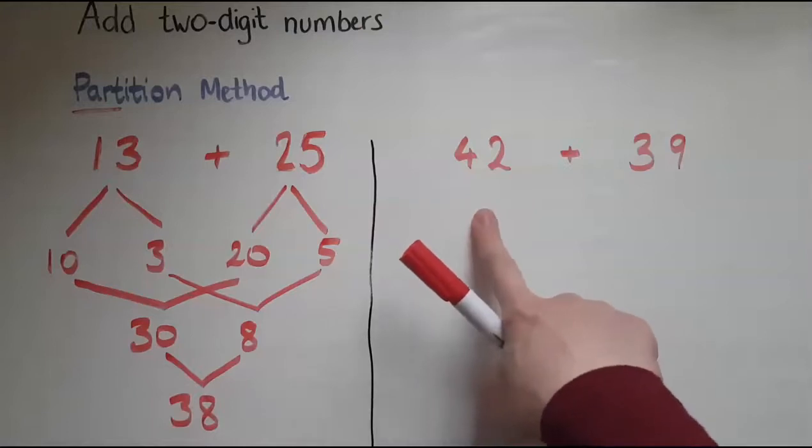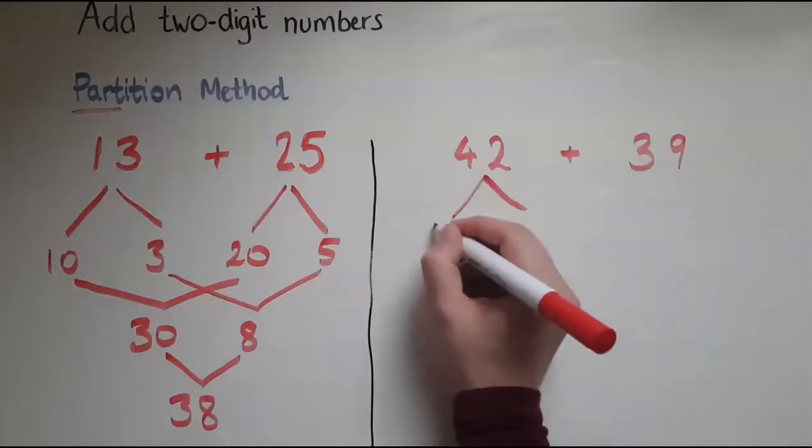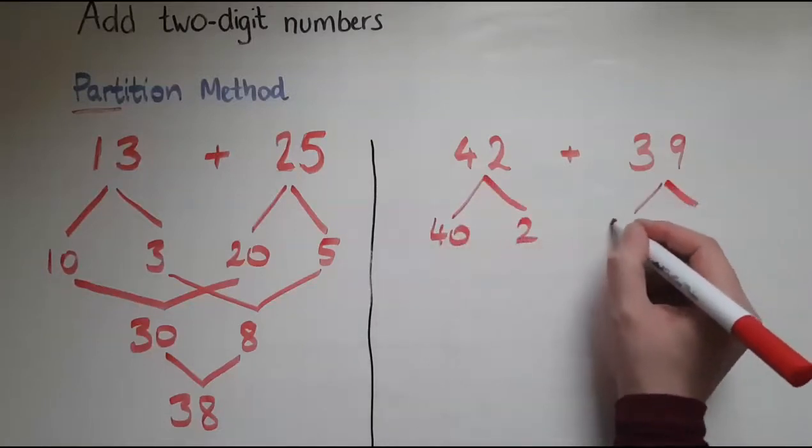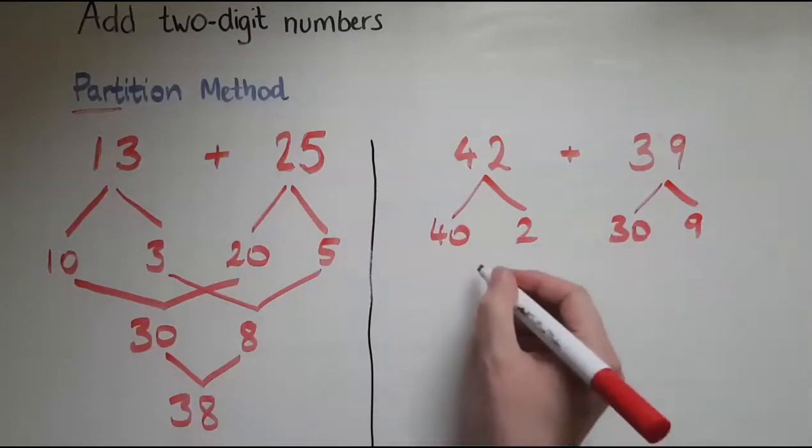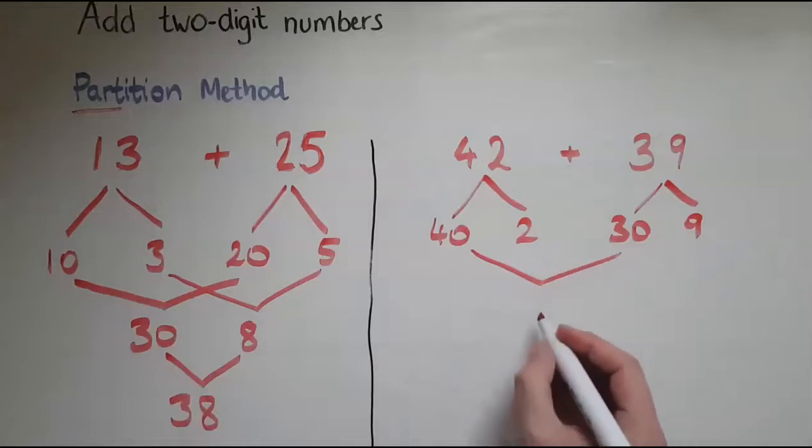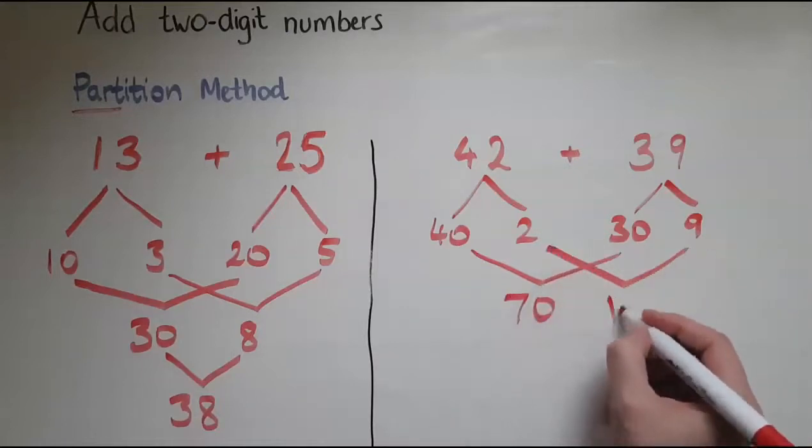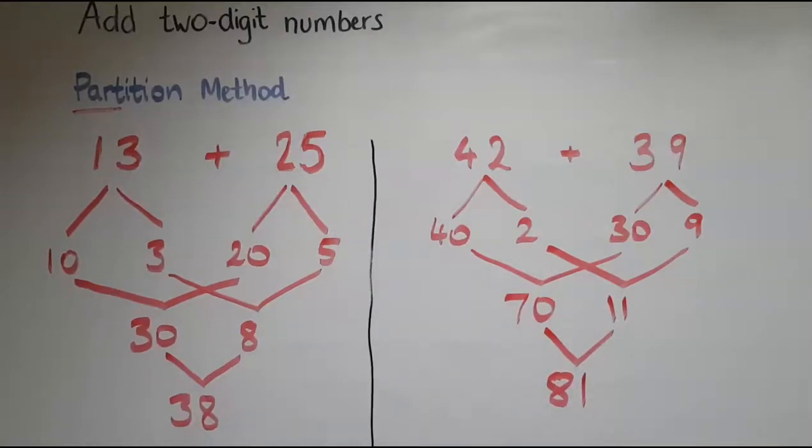Let's look at another example. We've got 42 and 39. So 42 is broken down into 40 and 2. 39 is broken down into 30 and 9. 40 and 30 makes 70. 2 and 9 makes 11. So 70 and 11 is 81. So this is how to use the partition method to add numbers.